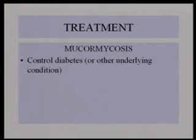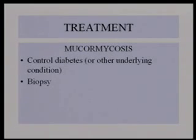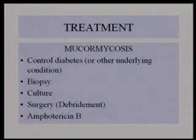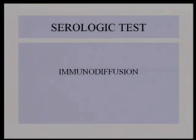Treatment: first, control the diabetes or whatever the underlying disease is — diabetes is the most common. Send biopsy and culture material to the lab. Then surgery and debridement. Amphotericin B is still probably the drug of choice — intravenous, rapidly acting, with the least recurrence of disease. There is also a serological immunodiffusion test that works pretty well. Remember: diabetics and mucormycosis.